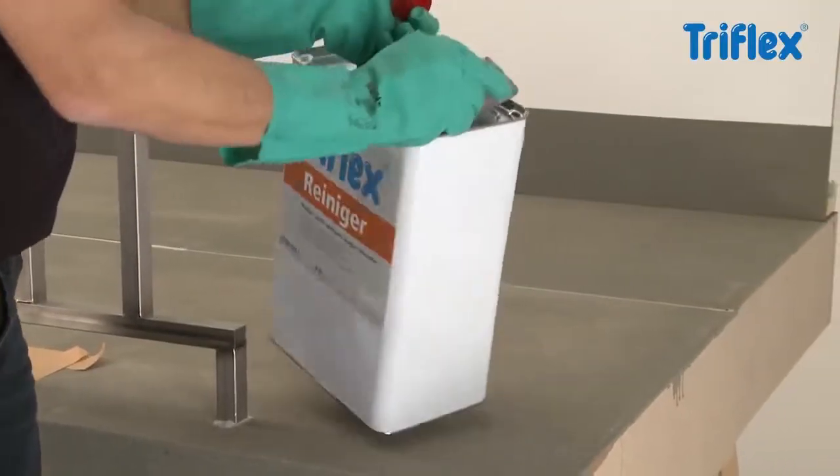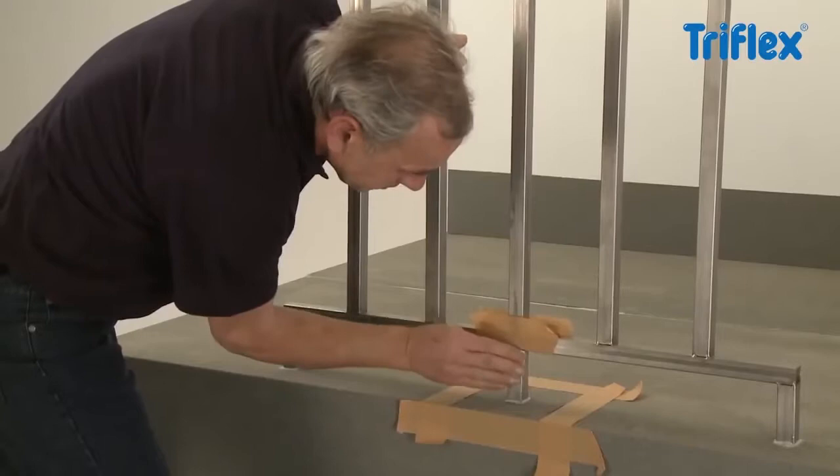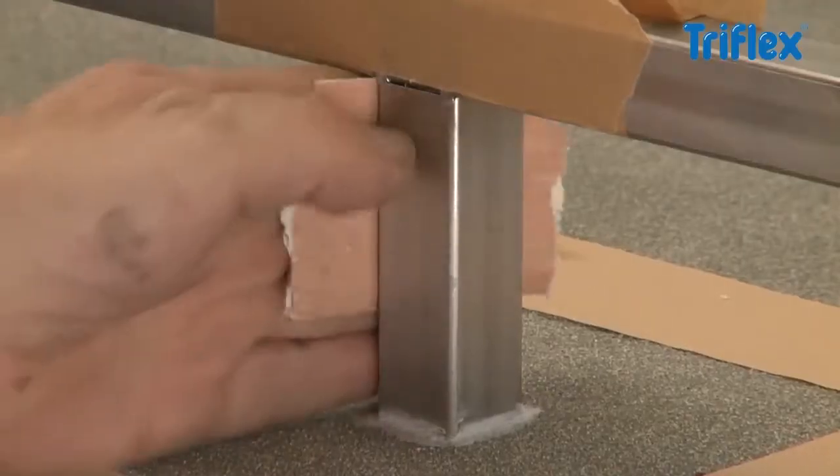Use Triflex Cleaner to degrease the metal areas of the railing posts and sandpaper as necessary to roughen the surface.